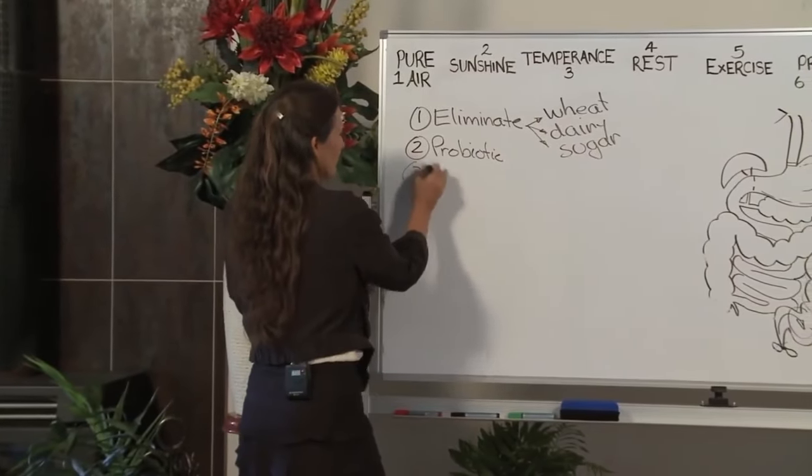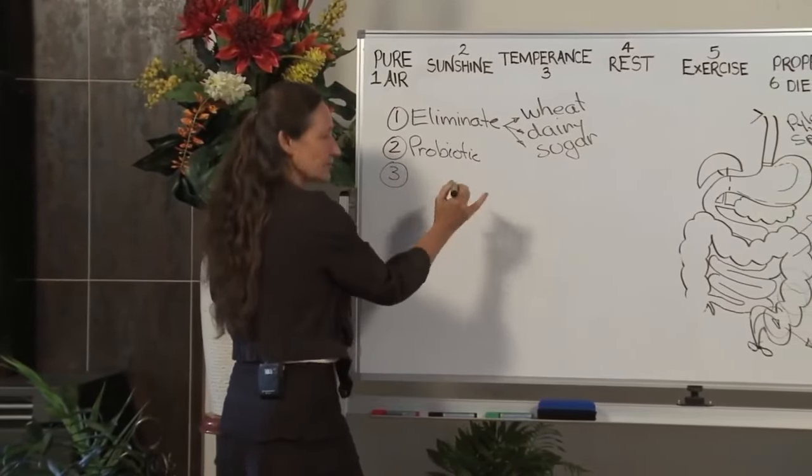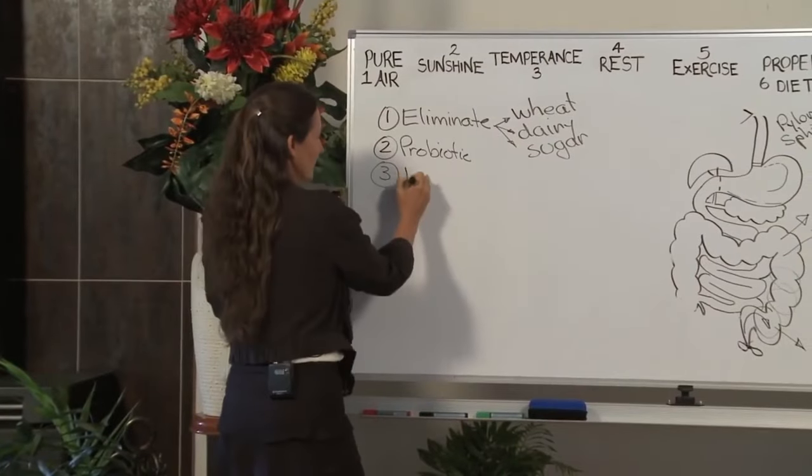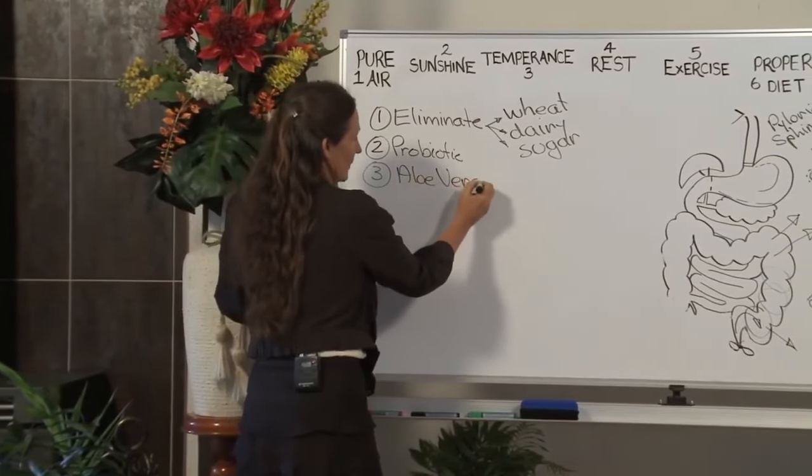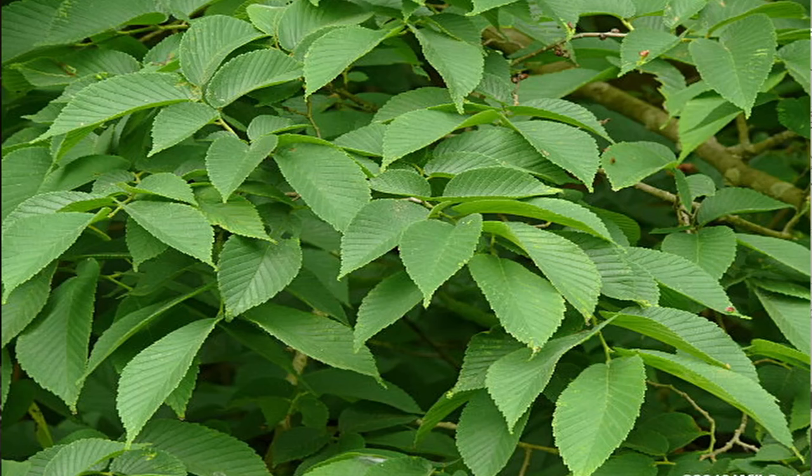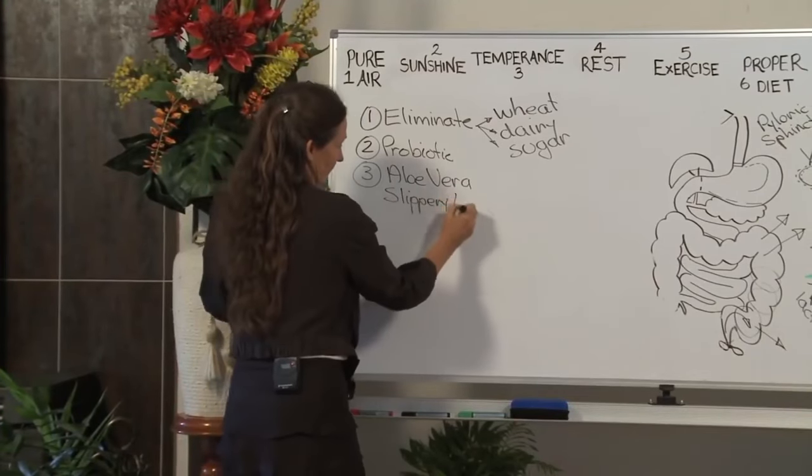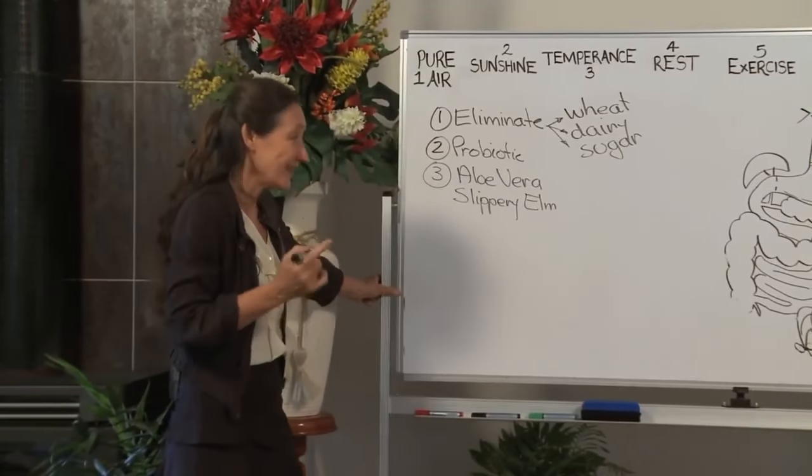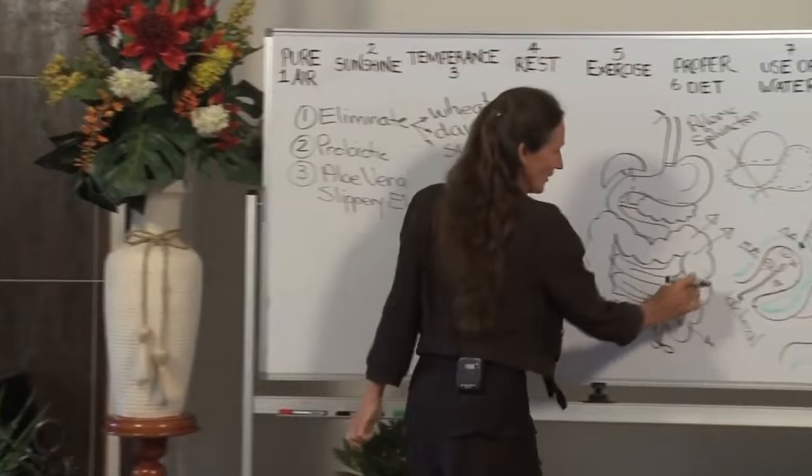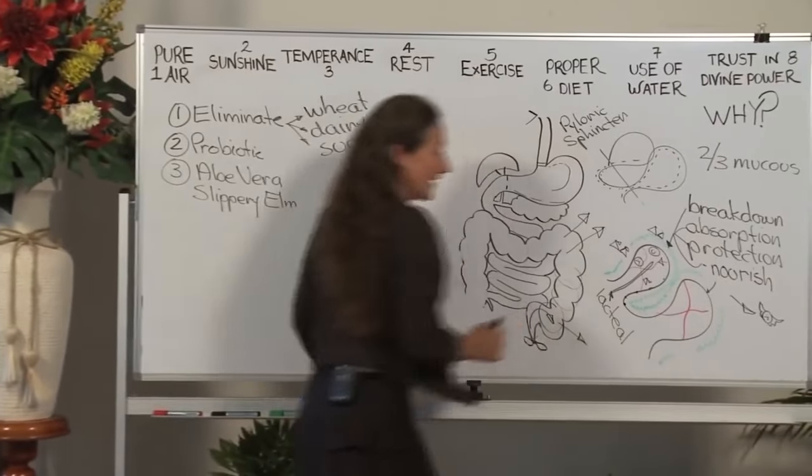Number three, there are two herbs that coat, soothe and heal that gut. One is aloe vera and the other one is slippery elm. Slippery elm is the powdered bark of the slippery elm tree. They're both a bit gooey, aren't they? And they should be gooey because we need some nice goo to line this gut.